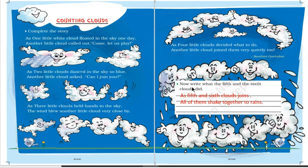Now write what the fifth and sixth clouds did. As the fifth and sixth clouds joined, all of them shake together to rain. You can change this line also.